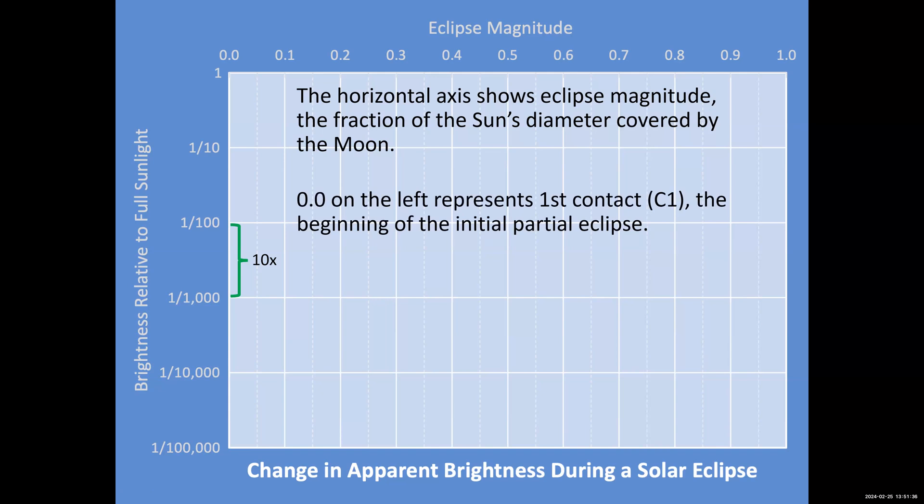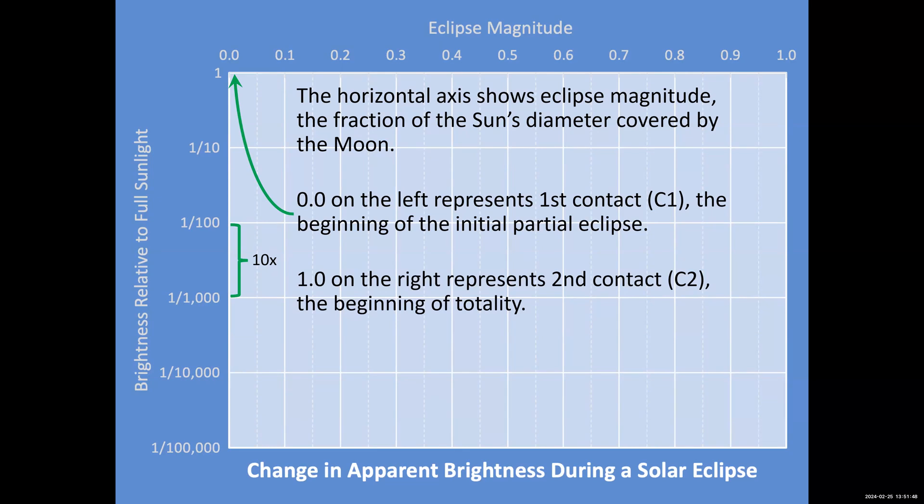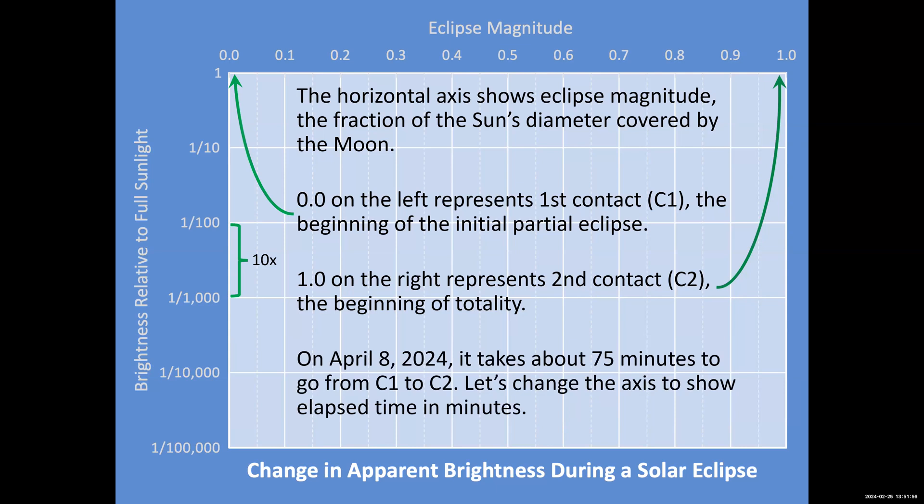Zero is first contact. The moon is just touching the sun and is about to start blocking it out. When we get to the other end of the axis at one, this is second contact. This is when totality begins. It takes about 75 minutes to get from C1 to C2. Each one of these horizontal blocks is seven and a half minutes. So we can actually change that into a timescale, starting from first contact at zero minutes and ending with totality at 75 minutes.